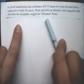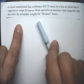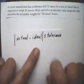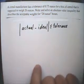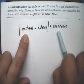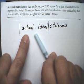Now, the tricky part is we have to put this into an absolute value inequality that describes the acceptable weights for a 20-ounce box. So the model we're going to use is Actual minus Ideal is less than or equal to the tolerance. This is a model for acceptable weights.